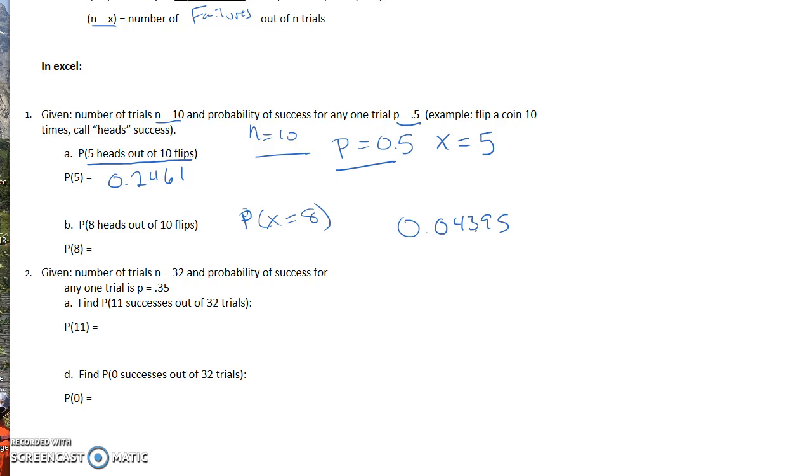Remember, if we round this one, two, three, four places, look to the number to the right of it. It is five or higher, so we round this up. This three becomes a four, and four, and zero. So the probability of getting eight out of 10 flips is 0.0440.